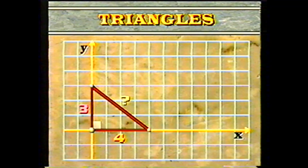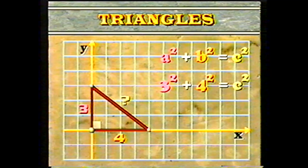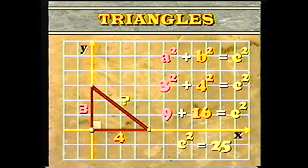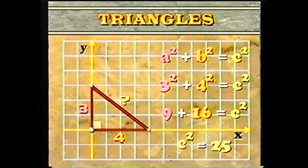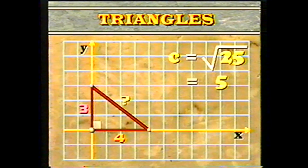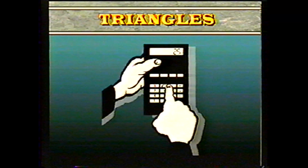Suppose that the lengths of the two legs of a right triangle are equal to 3 and 4. How long is the hypotenuse? Using the Pythagorean theorem, A squared plus B squared equals C squared. So 3 squared plus 4 squared equals C squared, giving us 9 plus 16 equals C squared, or C squared equals 25. C is the square root of 25, which equals 5. If you have a calculator with a square root symbol, you could key in 25 and then press the square root symbol to get the answer of 5.